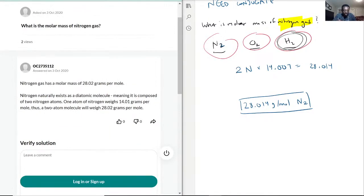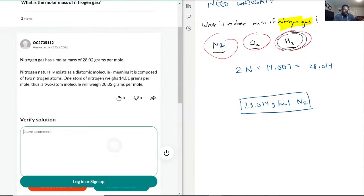Yep, 28.02. They just had probably different numbers. They have 14.01 is what they used and exactly got 28.02, so this is correct.